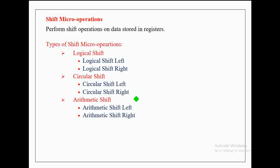Every type of shift micro operation can again be classified into two more types. Logical shift operation can be classified into logical shift left and logical shift right micro operations. Similarly, circular shift micro operation can be classified into circular shift left and circular shift right. In the same way, arithmetic shift micro operation can be classified into arithmetic shift left and arithmetic shift right micro operations.